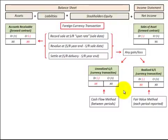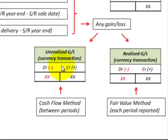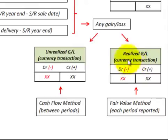To handle foreign currency transactions we have two different methods. First is the cash flow method, where we accumulate any gains or losses in these currency transactions as unrealized gains or losses on the balance sheet. Then for the fair value method, any gains or losses on those currency transactions get immediately realized as part of net income on the income statement.